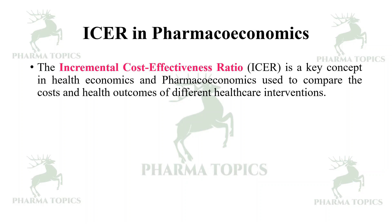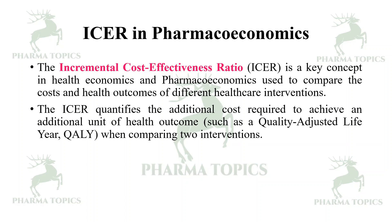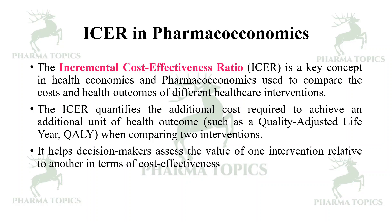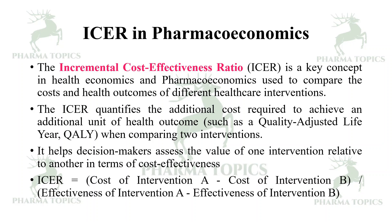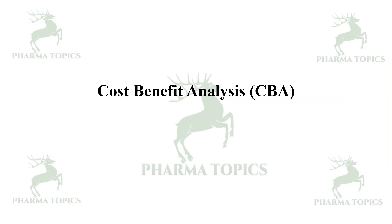Next is ICER. In pharmacoeconomics, ICER stands for Incremental Cost-Effectiveness Ratio. It is a key concept in health economics and pharmacoeconomics used to compare the costs and health outcomes of different healthcare interventions. The ICER quantifies the additional cost required to achieve an additional unit of health outcome, such as quality-adjusted life years, when comparing two interventions. ICER = (Cost of Intervention A − Cost of Intervention B) ÷ (Effectiveness of Intervention A − Effectiveness of Intervention B).